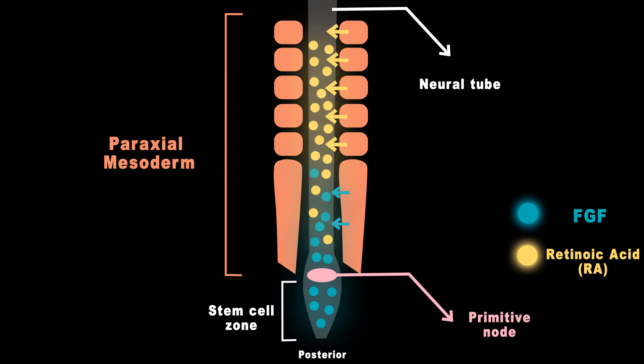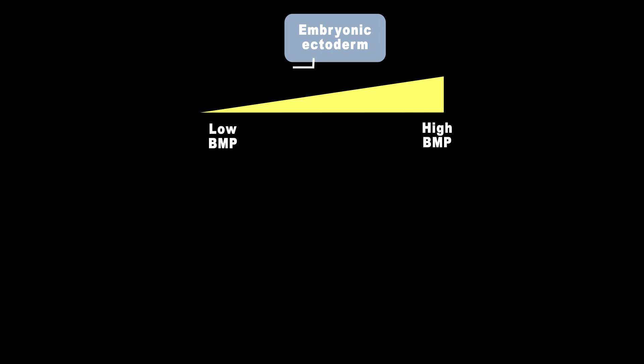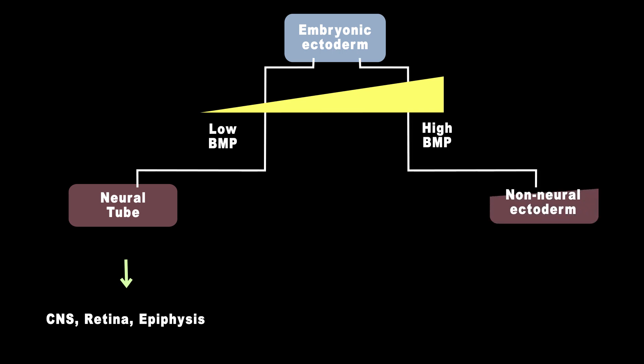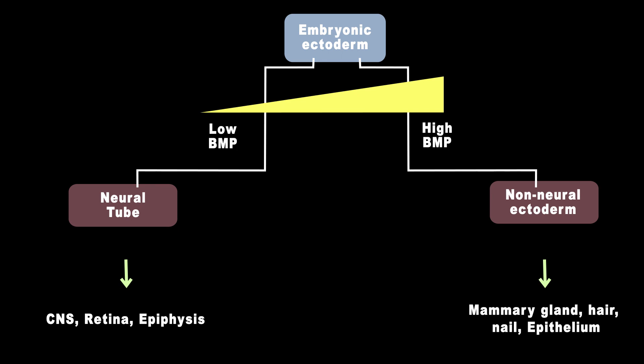The part of the ectoderm that is not affected by BMP4 makes the neural ectoderm, which forms the neural plate and neural tube. The neural tube then gives rise to the brain and spinal cord, as well as other structures like the retina, epiphysis, and posterior pituitary. The part of the ectoderm that has high levels of BMP becomes non-neural ectoderm, giving rise to structures such as sweat glands, mammary glands, hair, nails, and epithelium.